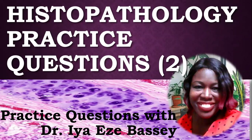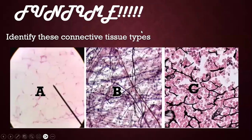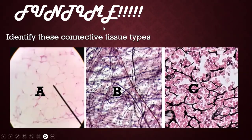This is histopathology practice questions, part two. I remain Dr. Iai Zebasi. I just want to ask you to share this video as far and wide as you can. Subscribe to our channel, like, and comment. This is a free resource, and this is how we keep this channel open. Thank you so much. Fun time! I want you to identify these beautiful-looking tissue types — A, B, and C. There will be no GIFs this time; those are in '30 Things You Must Know About H and E.' Please keep watching to the end to see whether you have gotten the answers correct.